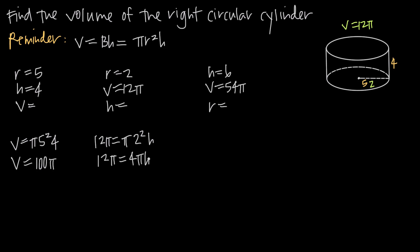To solve for h, we divide both sides by 4 pi, giving us h equals 12 pi over 4 pi. The pi cancels from numerator and denominator, leaving h equals 12 over 4, which is 3. So the height of this cylinder is 3 if the radius is 2 and the volume is 12 pi.